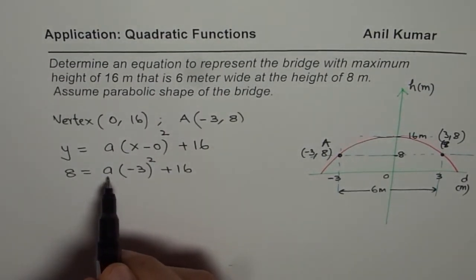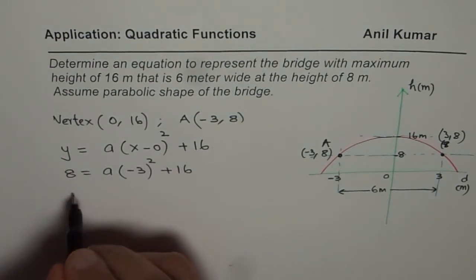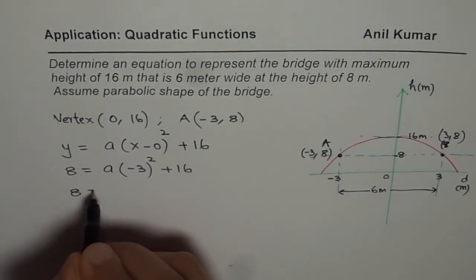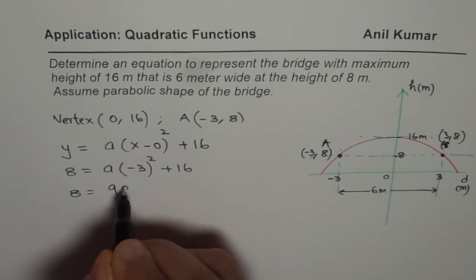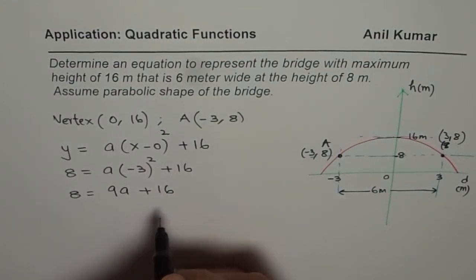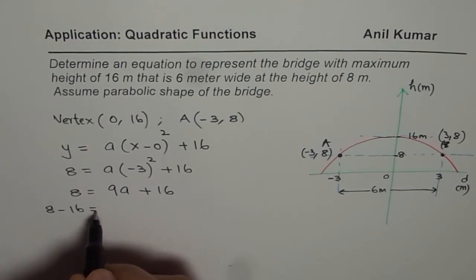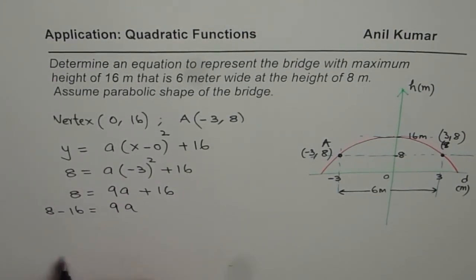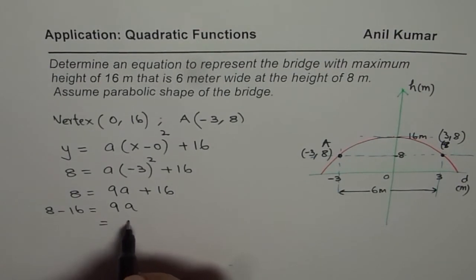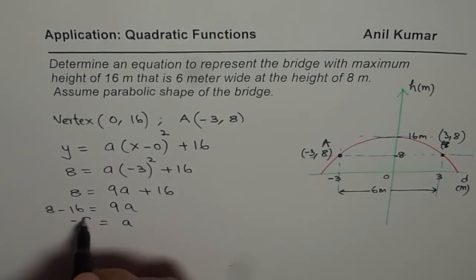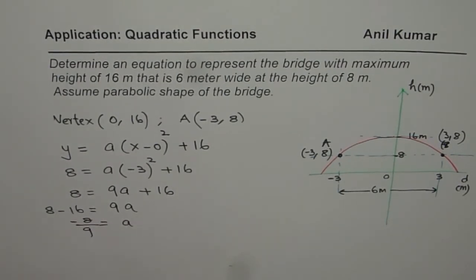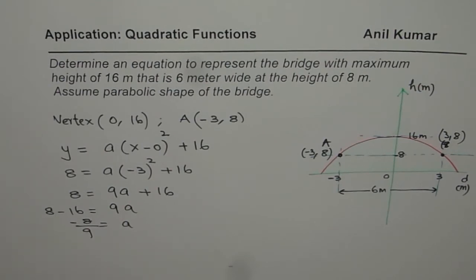So we get what? So we have 8 equals to 9A plus 16. So when you take 16 on this side, so 8 minus 16 equals to 9A. And from here, A is equals to minus 8 over 9. So we get the value of A as minus 8 over 9. And therefore...